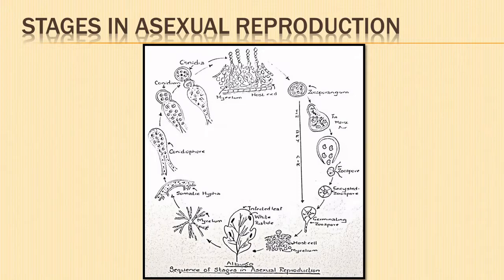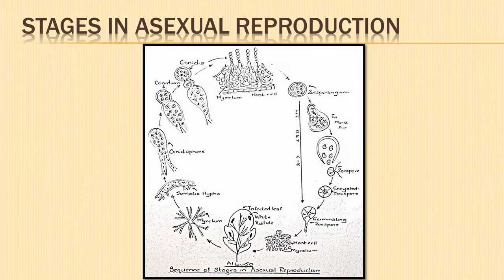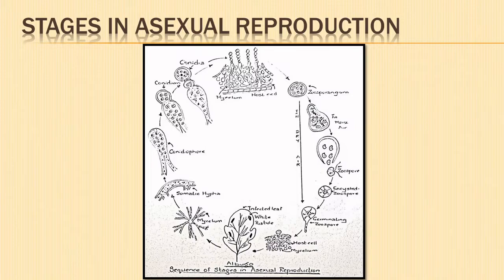Let us revise the various stages in asexual reproduction with the help of a diagram. The somatic mycelium gives rise to conidiophores, which form spherical multi-nucleate conidia. From the conidium arises the zoosporangium. Depending upon the climatic conditions, it either directly forms a germ tube and infects a new host plant, or the zoosporangium may produce biflagellate kidney-shaped zoospores. After a period of encystment, they develop a germ tube and infect the new host plant by producing branched mycelium.